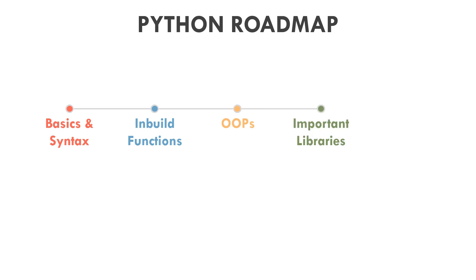Another important Python topic is libraries. Python has many basic libraries. You will learn how important libraries are in Python, like NumPy, Pandas, Scikit-Learn, and Matplotlib. There are many libraries and use cases. You can use these in business and machine learning, for things like matrix multiplication and graph plotting.